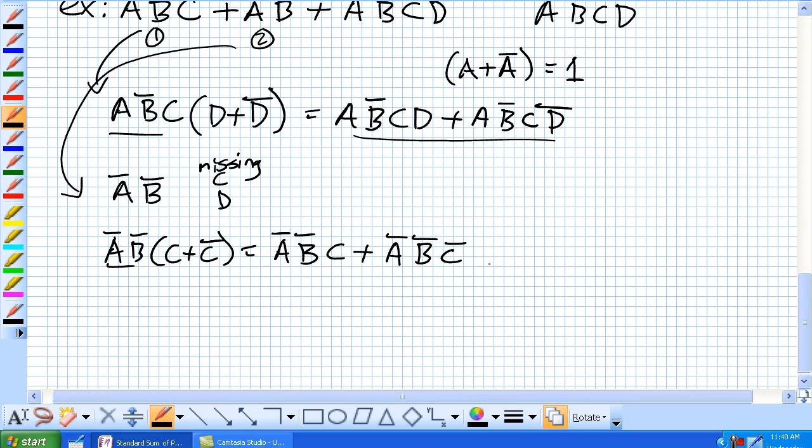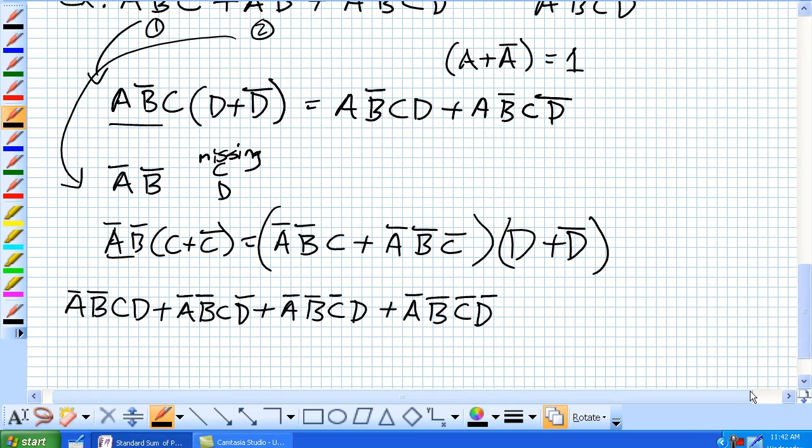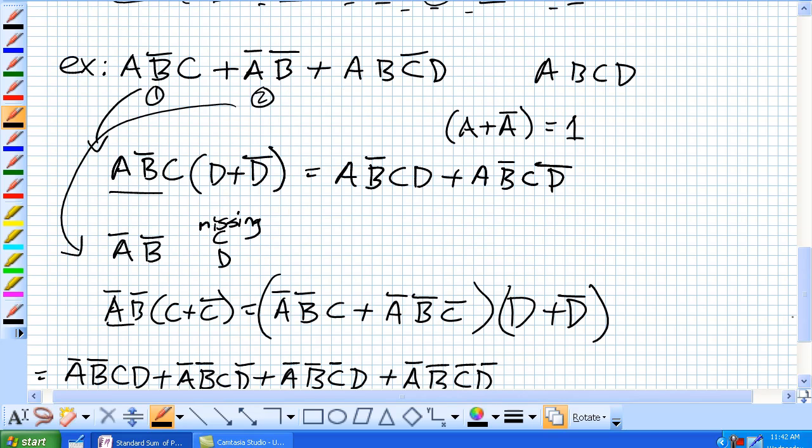But now we've got to take this because it's still missing D. And multiply that times 1. So you've got to do your FOIL method here. And you're going to get, and there you go. And this is all equivalent because we multiplied it by 1 and multiplied it by 1 again. It's all still equivalent to our second term right there.